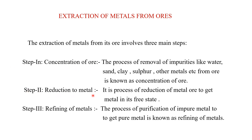The second step is reduction of metal. In this process, the metal ore is reduced to obtain the pure metal — that is, the metal is removed from its oxide or ore form. The metal obtained after this step is still associated with some impurities. Those impurities are removed by the third step, known as refining of metals. Refining is the process of purification of impure metal to get pure metal — for example, removing the remaining 10–20% impurities to obtain a pure substance.